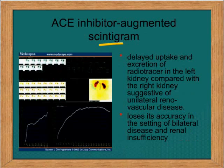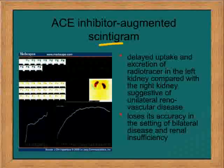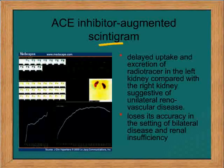Another extremely accurate way to study renal artery stenosis is scintigraphy after giving an ACE inhibitor. One will find delayed excretion on the side where there is renal artery stenosis. On the other hand, if the patient has bilateral renal artery stenosis, this study becomes more difficult to interpret.